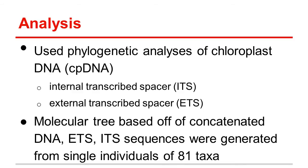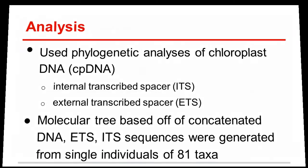They also used Plukenetia and Tragia, which are closely related outgroup species of the Dalechampia vines. Dalechampia vines originated and diverged from Tragia, and they used these methods to detect addition and subtraction of Dalechampia characteristics through time.